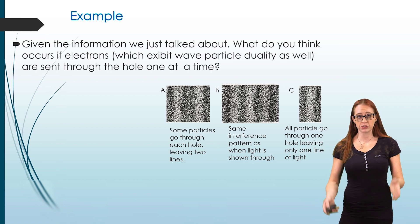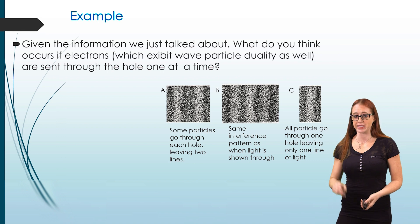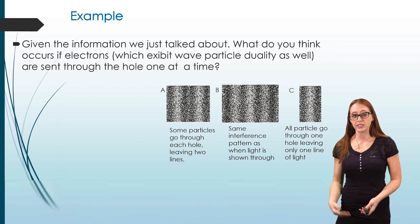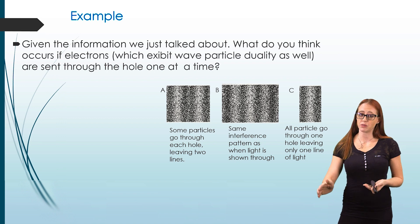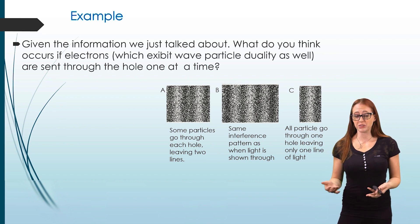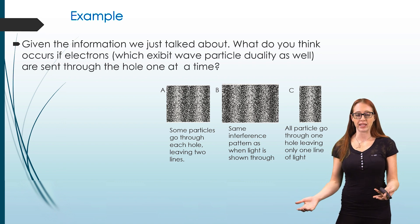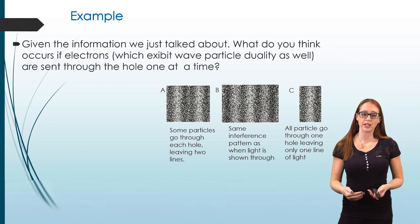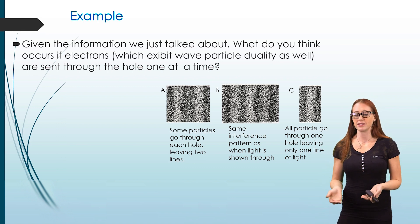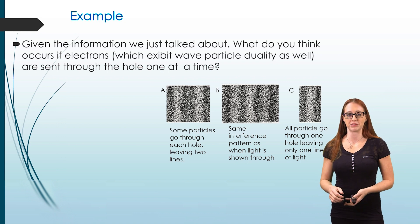Hopefully you picked that you still get the interference pattern. This might seem strange, because if you're sending one electron through at a time, you wouldn't think it could interfere with itself. And yet it does. This has to do with the fact that it behaves like a wave — even if you're only sending one electron through, that electron effectively goes through both slits and then interacts with itself. There are different explanations for how this could work, and scientists are still doing research on this today.